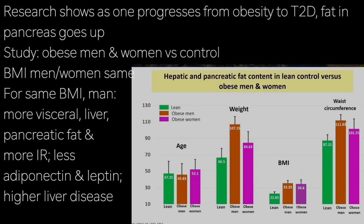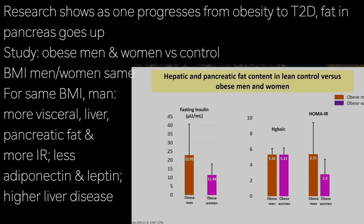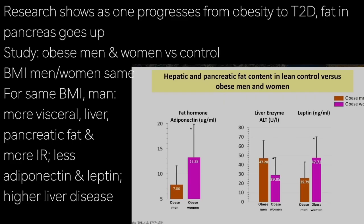Here is a study that looked at obese men and women and compared them to lean controls. The body mass index of obese men and women is similar — both higher than lean controls. However, women are blessed: for the same BMI, men had more visceral fat and higher liver and pancreatic fat content. They were also more insulin resistant, as evidenced by high fasting insulin and high HOMA-IR scores, accompanied by lower levels of the healthy fat hormone adiponectin as well as leptin, and higher blood markers of liver disease.